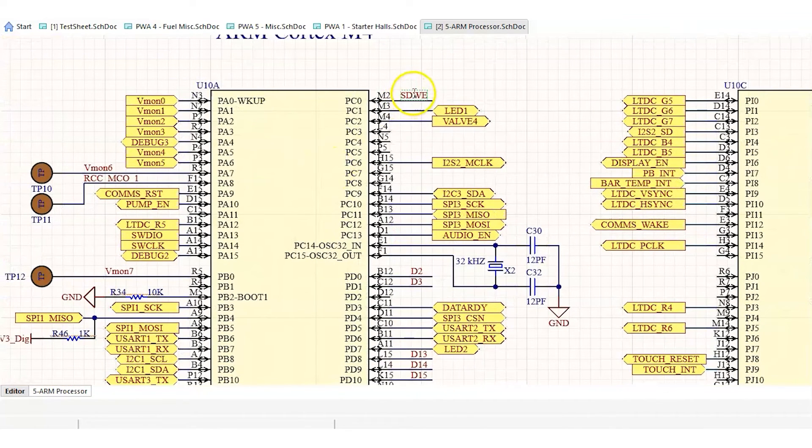Here we're using net names to define connections inside the sheet and we're using ports to define connections to other components in different sheets.